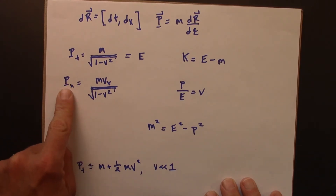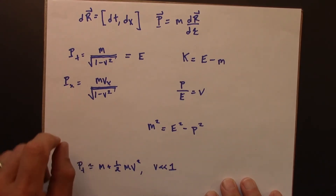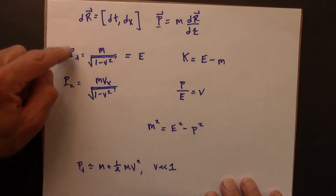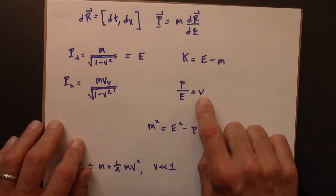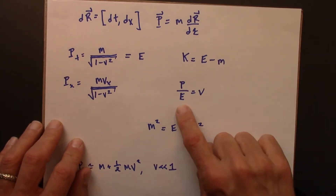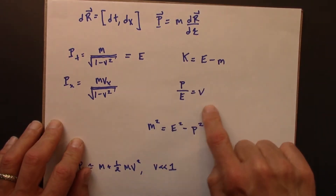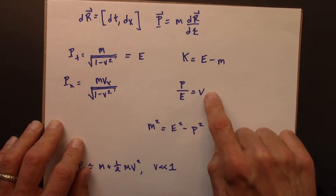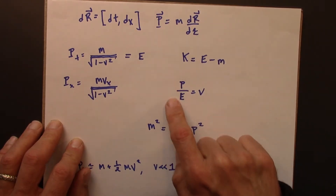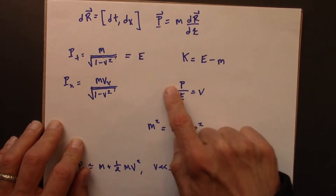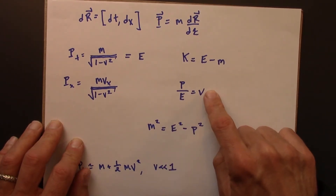We've got the momentum here, and if I divide this by this, I just get v. So that gives this really nice, simple relationship between relativistic energy, momentum, and the speed of the object.